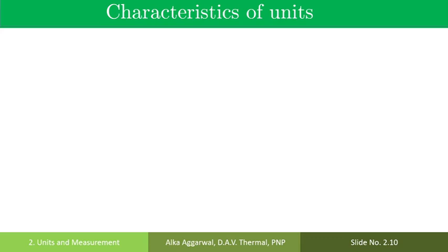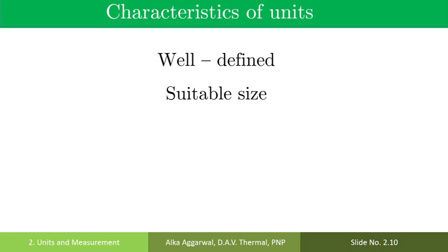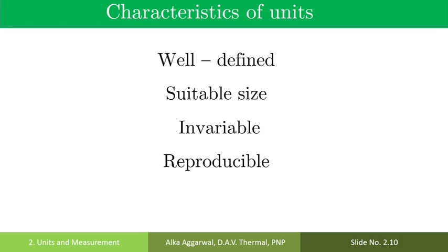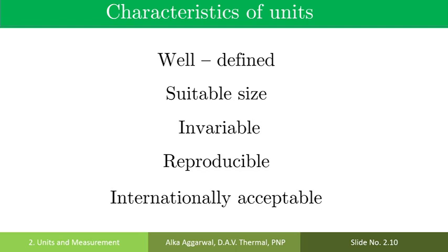But all units are not accepted internationally. A system accepts only those units which satisfy some conditions. It should be accurately defined. It should be of suitable size — not too large and not very small. It should not change with time, temperature, pressure, etc. That is, it should be invariable. Replicas of units should be available easily, that is, it should be reproducible. It should be accepted internationally.